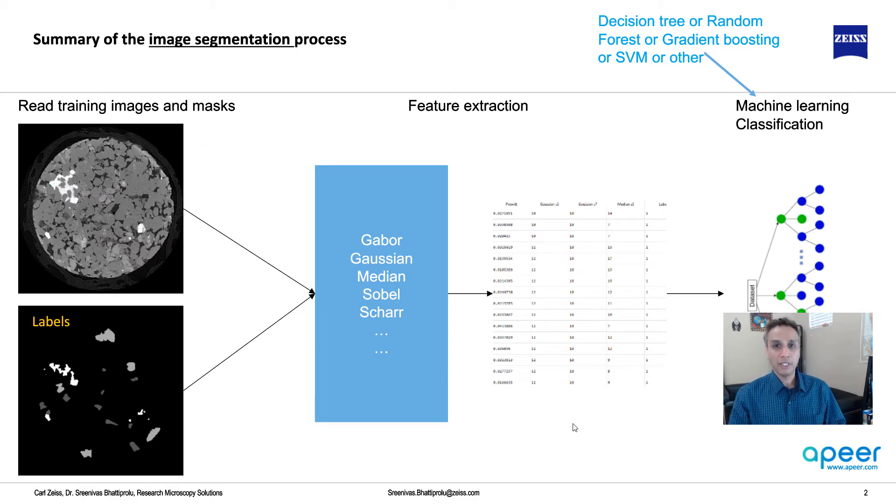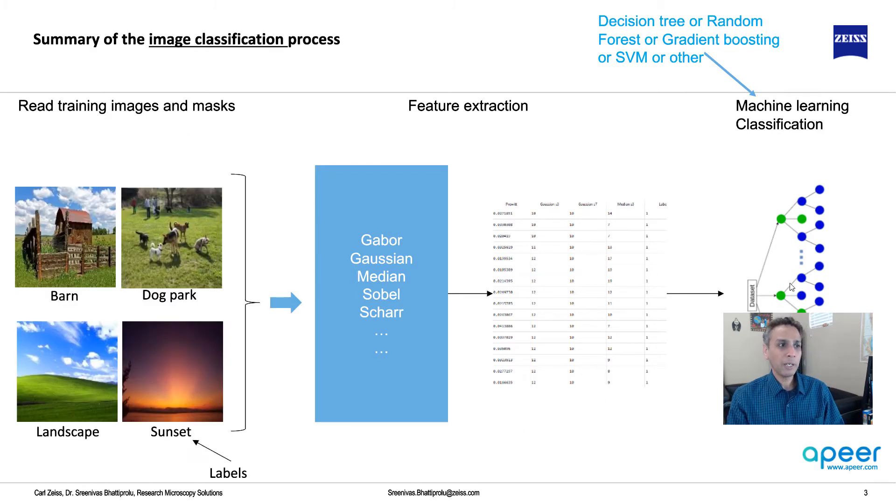First, let's look at semantic segmentation. What have we done? We took our image and labeled certain pixels. You can go to www.apeer.com to annotate your own images. We used our input image to extract features - the pixel values itself and responses from Gabor filtering, Gaussian filtering, median filtering, edge detections and so on. We captured those features and used a classifier like random forest, decision tree, gradient boosting or support vector machine.